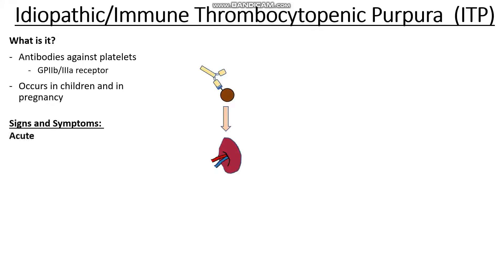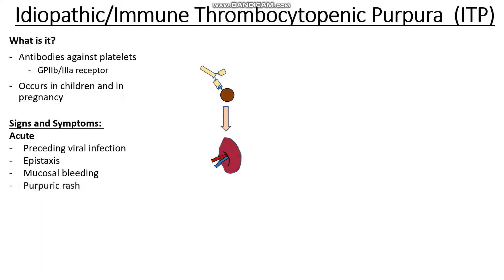In acute disease, it usually comes on after having a viral infection. This is especially common in children who will have issues such as bruising or bleeding following a viral infection. Other symptoms include nosebleeds, because if we can't clot properly we are more likely to bleed from exposed areas like the nose. There can also be mucosal bleeding — such as bleeding from the gums when brushing teeth — and purpuric rashes, because we are not able to form the initial platelet plug.